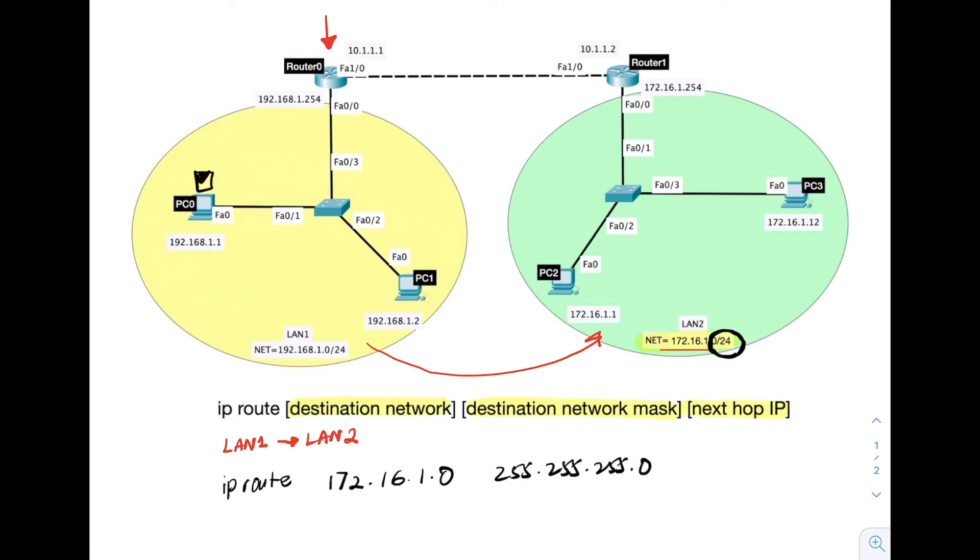Let's look at an example. Suppose that PC0 sends a packet to PC2. The packet will go from PC0 to the switch, and then to router 0. Router 0 then forwards this packet to the next hop router, which is router 1.